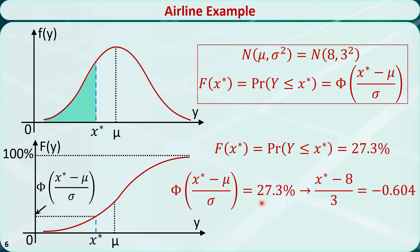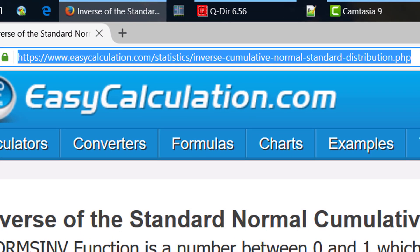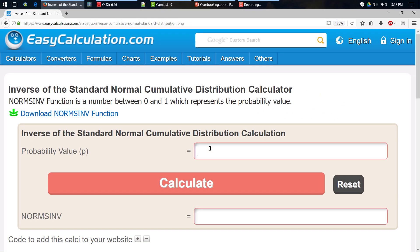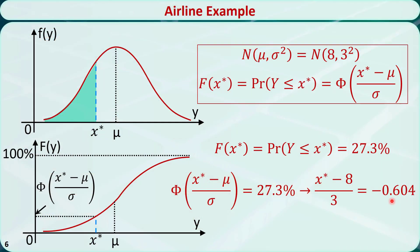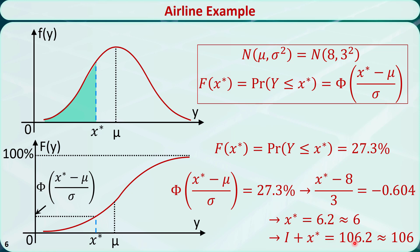Let's use the inverse standard normal cumulative distribution calculator to find the value of this item — the link to this online calculator is given below the video. Type the probability value 0.273 into the box. It shows the inverse is equal to minus 0.604. Finally, the optimal overbooking quantity X* is equal to 6.2 seats, meaning the airline may oversell 6 seats. This implies that the total number of tickets that can be sold is the inventory I plus X*, which equals 106.